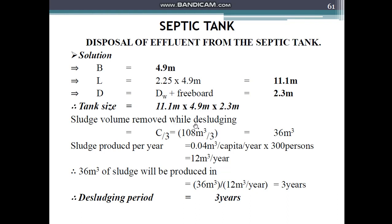Sludge volume removed during desludging = C/3 = 108/3 = 36 m³. Sludge produced per year = 0.04 m³/capita/year × 300 people = 12 m³/year. Since desludging occurs at 36 m³ and 12 m³ is produced per year, the desludging interval = 36 ÷ 12 = 3 years. So in 3 years, 36 m³ of sludge will be generated and then cleaning will be done. The desludging period is 3 years.